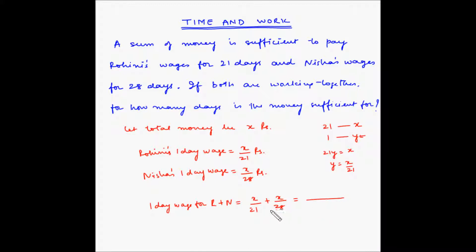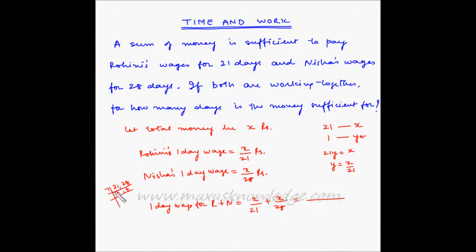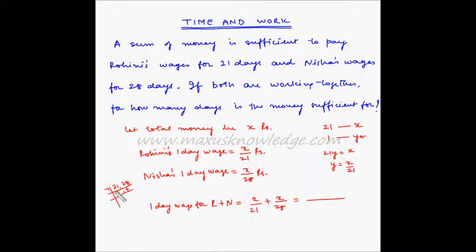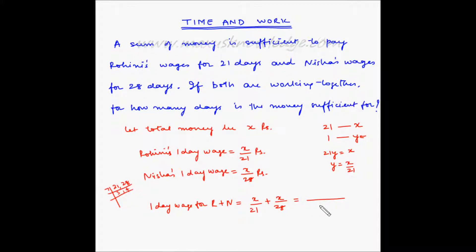Now let's find out the LCM. So 21 and 28: 7 threes are 21 and 7 fours are 28. So the LCM is 7 multiplied by 3 multiplied by 4. That gives us 7 threes are 21, and 21 multiplied by 4 is 84. So 84 is the LCM.